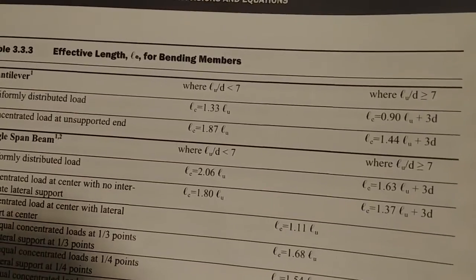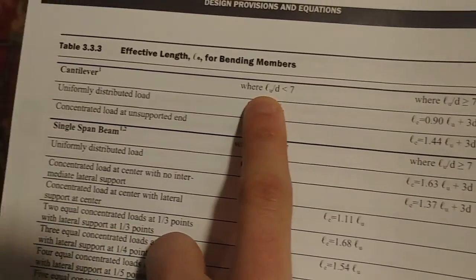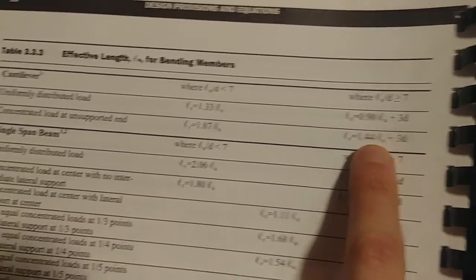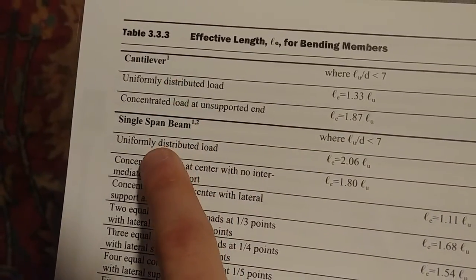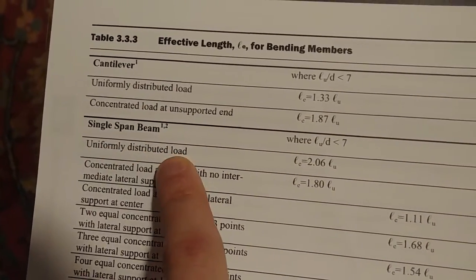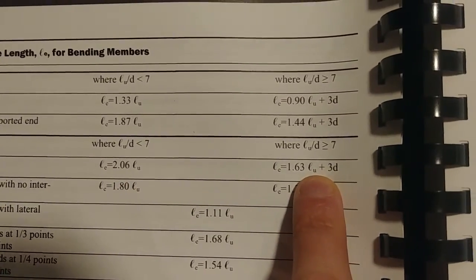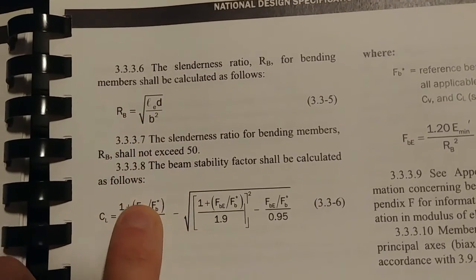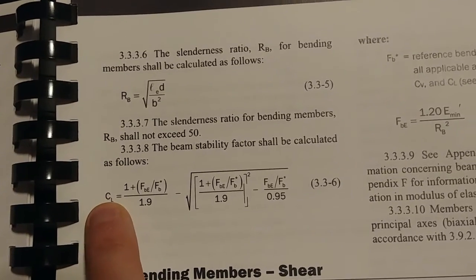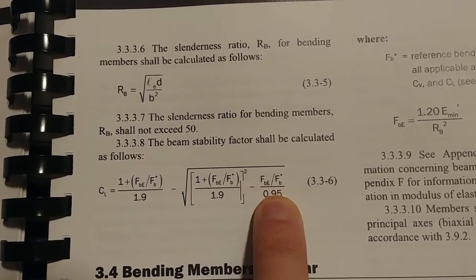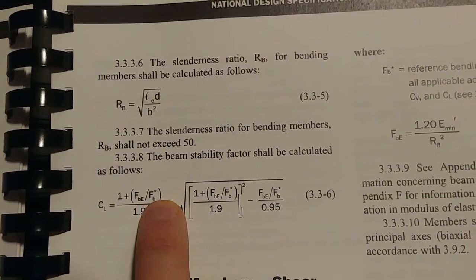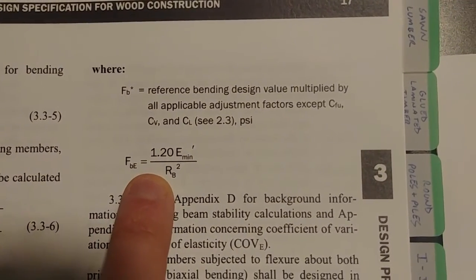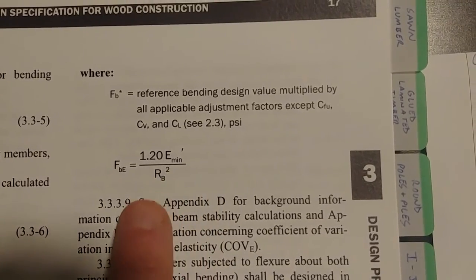Here we are. So you first have this first chart and you want to check your LU over D. So this is 3.3.3, is less than seven, or if it's greater than seven. So ours was greater than seven. And then it's all your different spans. You have cantilevers and single span. We have a uniformly distributed load. So we come across and that's our equation. So that's how we got LE. You move to RB equals that. We talked about it before. Then you come down and CL is what we're looking for equals all of this junk. Well, we still need FBE and F star B, which then up here is these. So right now we're doing FBE, which is 1.2 times E min prime over RB squared.